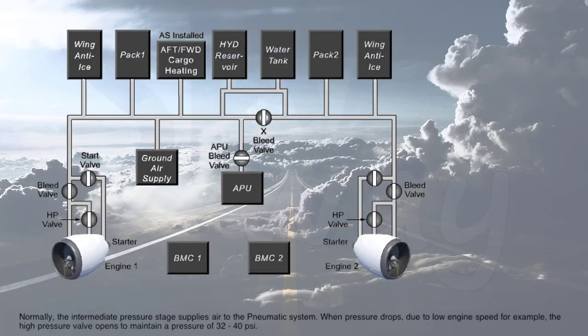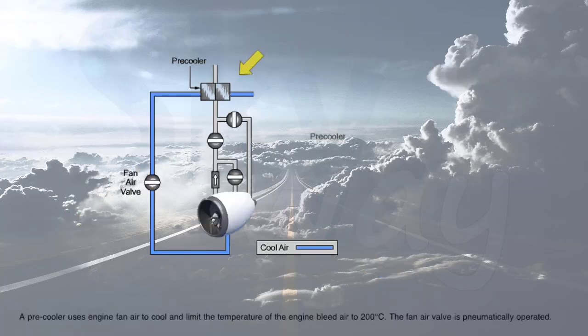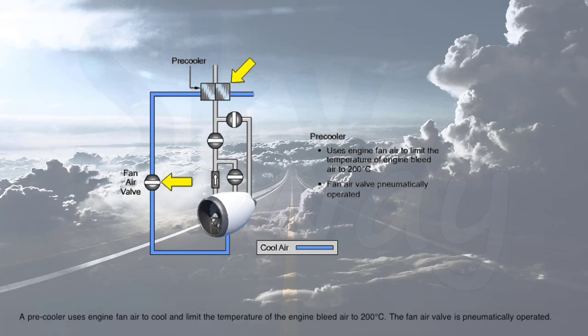Normally, the intermediate pressure stage supplies air to the pneumatic system. When pressure drops due to low engine speed, for example, the high pressure valve opens to maintain a pressure of 32 to 40 psi. A pre-cooler uses engine fan air to cool and limit the temperature of the engine bleed air to 200 degrees Celsius; the fan air valve is pneumatically operated.